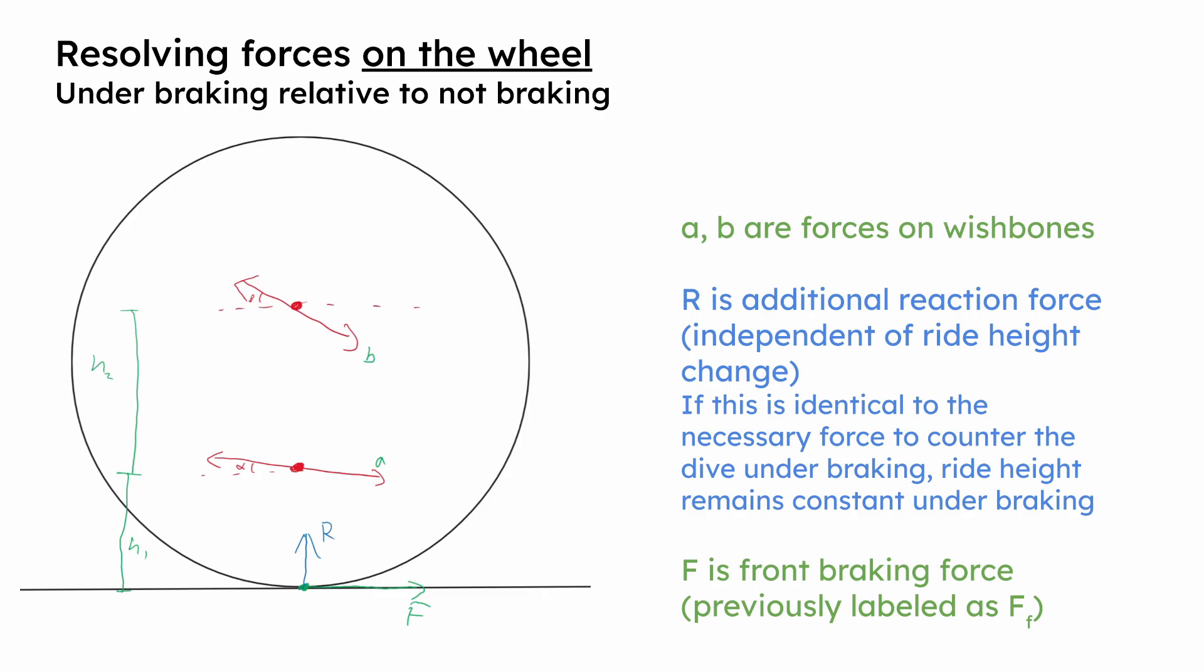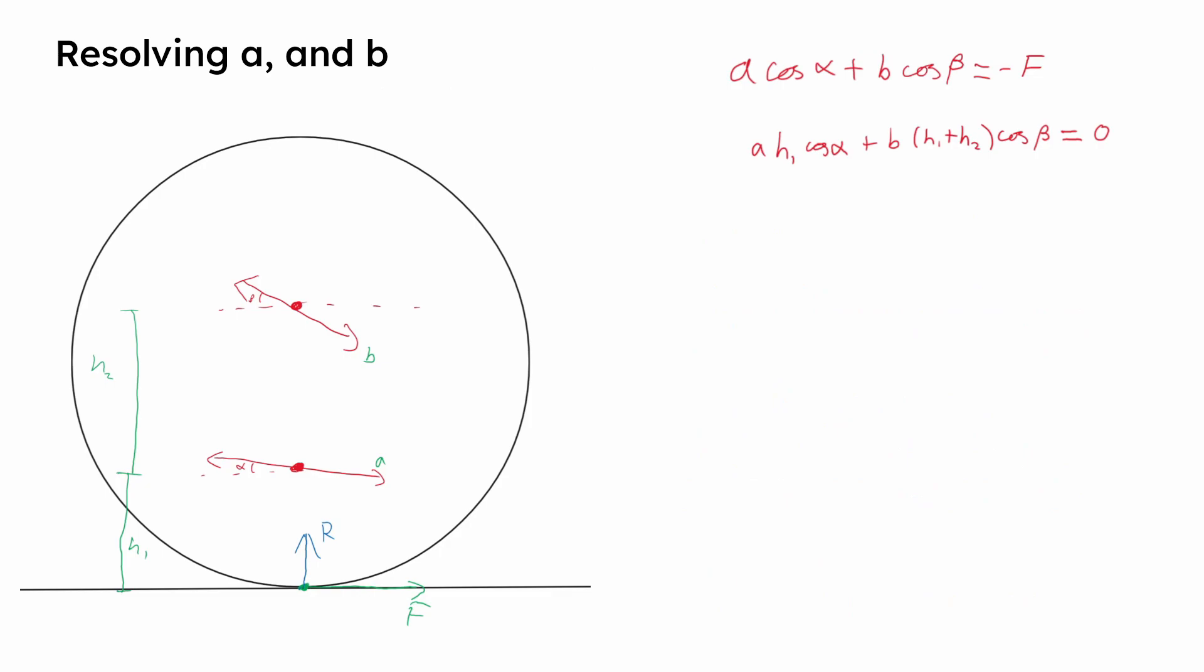If you want to pause the video to find A, B and R in terms of H1, H2, F, alpha and beta, now is the time to do so. As the wheel is maintained in equilibrium, the forces to the left equal those to the right, giving the top equation, and furthermore the moments, which in this instance have been taken about the contact patch, all sum to zero. Rearrangement of the second equation gives an expression for A, which can then be substituted into the first equation and rearranged for B, which can then be used to find A.